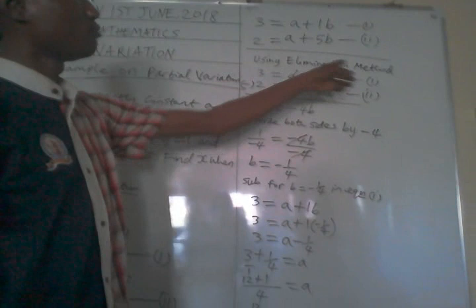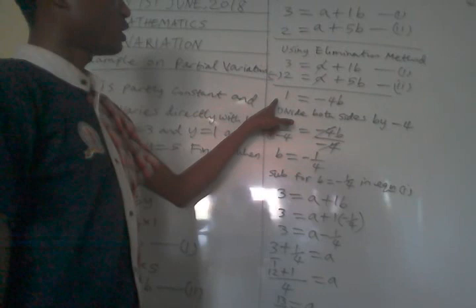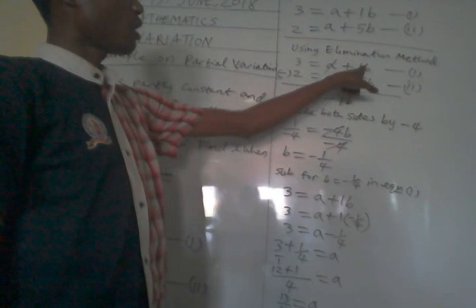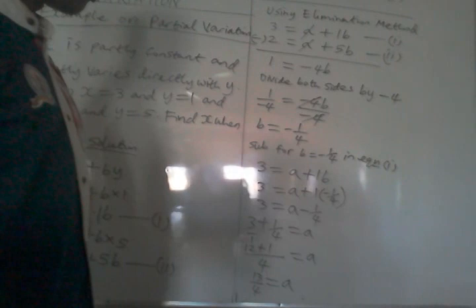Using elimination method, put minus. Then 3 minus 2 gives us 1. a will cancel a. 1 minus 5 gives us minus 4.